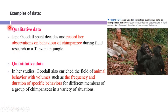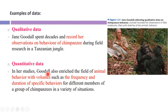Jane Goodall conducted research on the behavior of chimpanzees in the Tanzanian jungle. She observed behaviors such as how chimpanzees hunt, kill, and eat small colobus monkeys, what they eat, and how they use tools. These observations recorded as information and photographs represent qualitative data. She also collected quantitative data, such as the frequency and duration of specific behaviors, which are countable and measurable.